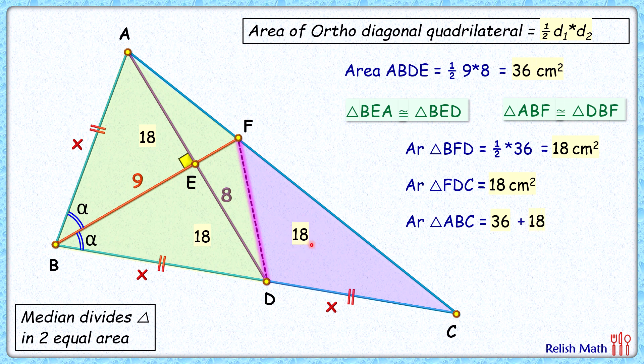Or the area of this triangle ABC is 54 cm², and that's our answer. I hope you enjoyed the solution. I will see you in the next video. Till then, tata, bye bye.